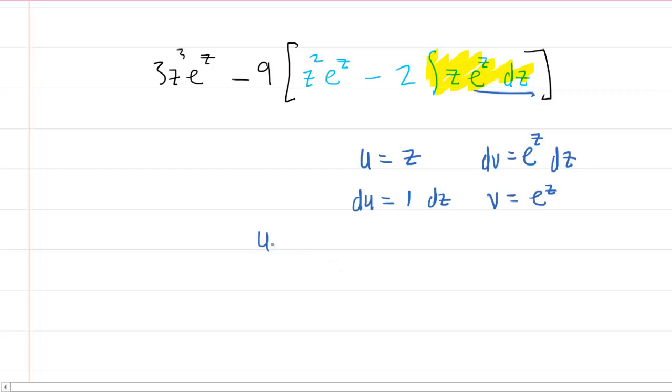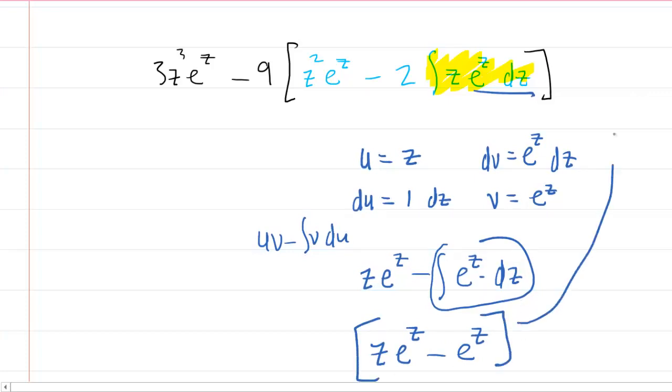So remember, one more time, uv minus integral vdu. So we take our u, we multiply it by our v, and then we subtract the integral of our v times our du. Thankfully and finally, we are left with a simple integral. That's the integral of e to the z, and the integral of e to the z is e to the z.